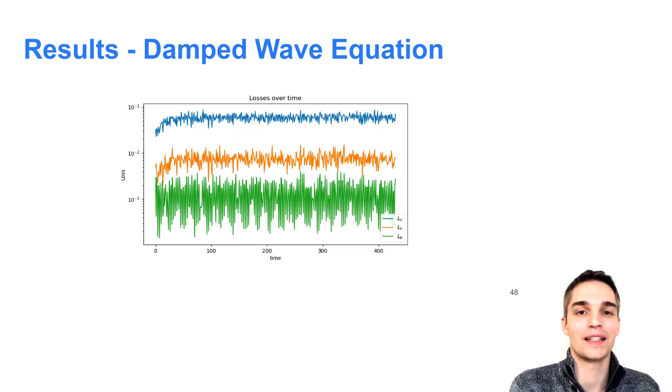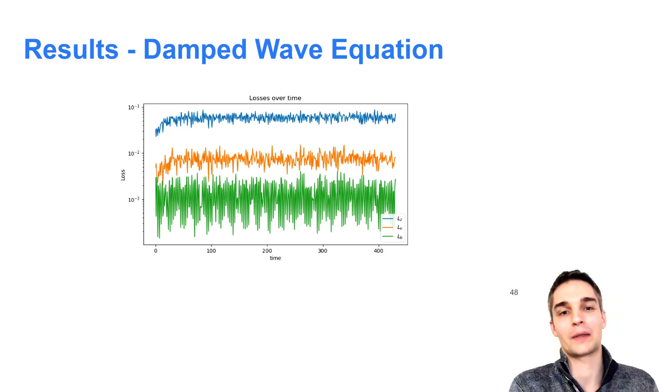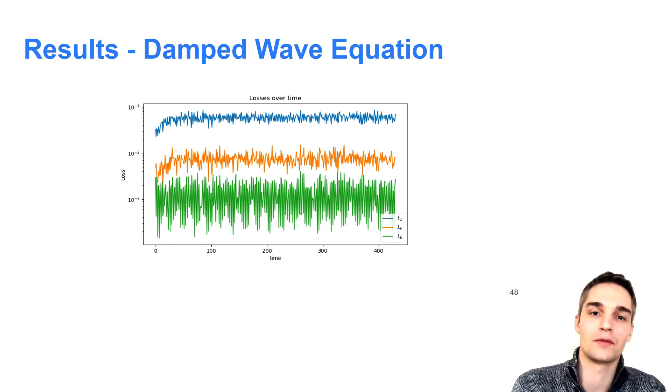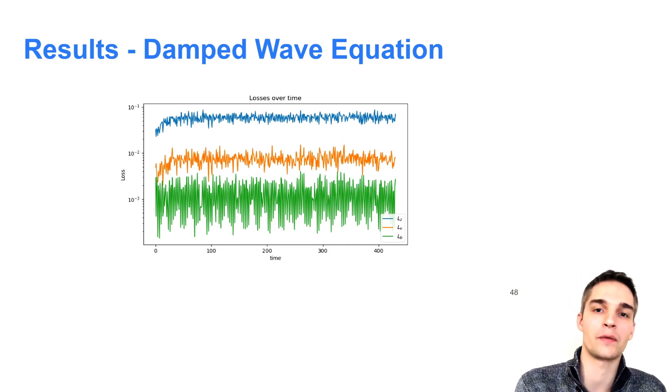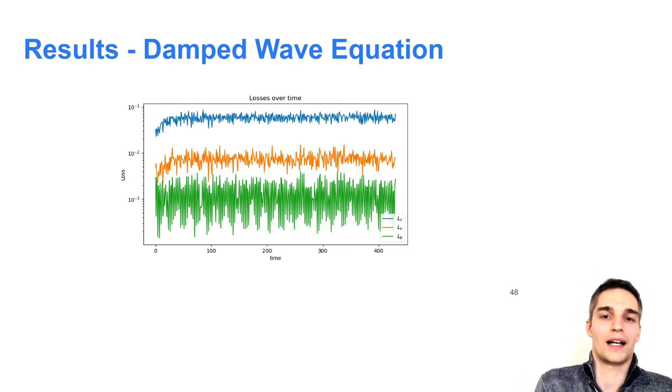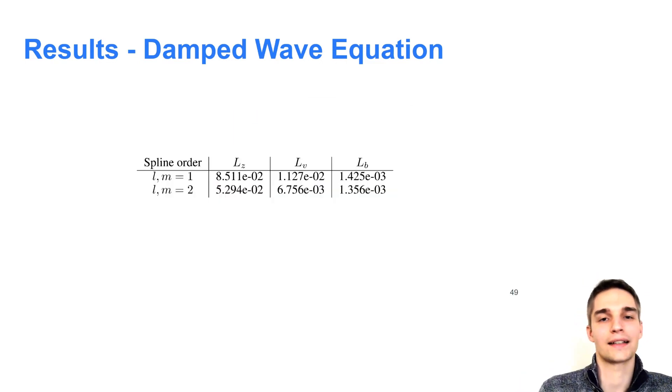To investigate the stability of the spline-PIN method for the wave equation, we plotted the evolution of the individual loss terms over time. As you can see in this graph, after a short initial warm-up phase, the simulation remains stable over hundreds of iterations. In the beginning, the loss values are a bit smaller, since we set the initial conditions to 0, which fit the wave equation very well in this phase of the simulation. We tested Hermite splines of order 1 and order 2 in x and y and observed significant improvements for our second order splines as shown in this table.